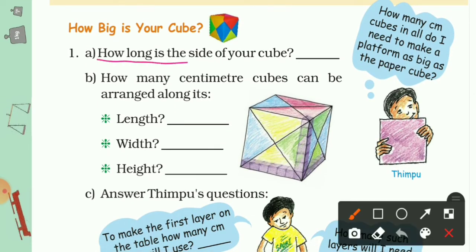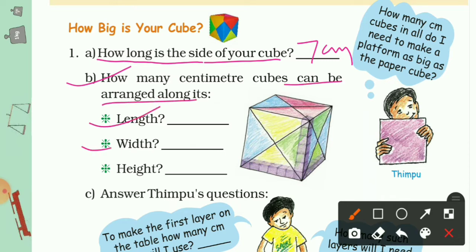The first question is: how long is the side of your cube? The answer is 7 cm. Part B asks: how many 1 cm cubes can be arranged along its length, width, and height? The answer is 7 cm, 7 cm, and 7 cm for all three dimensions.